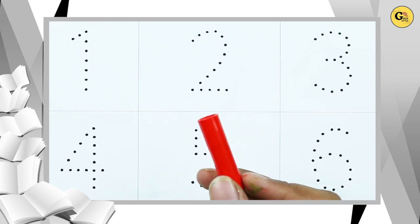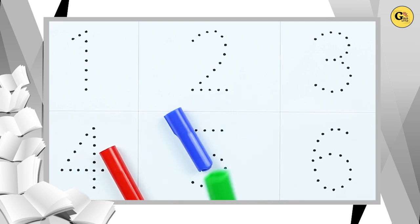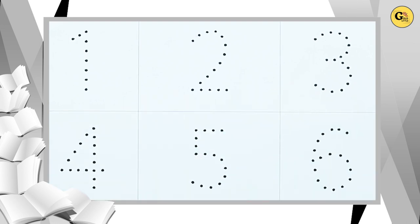Red color, blue color, green color, orange color. Let's start. How to write numbers? 1 to 10.